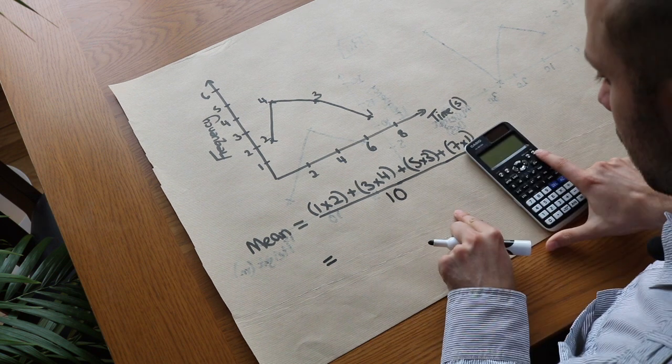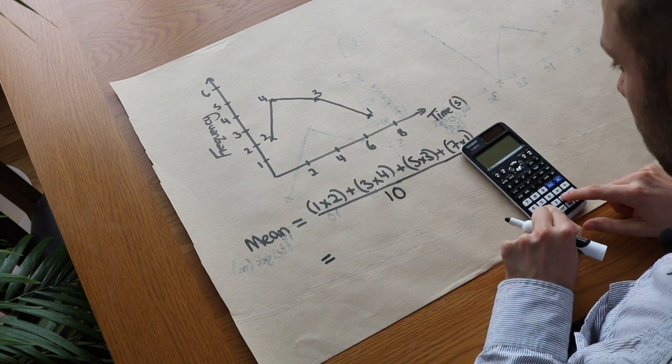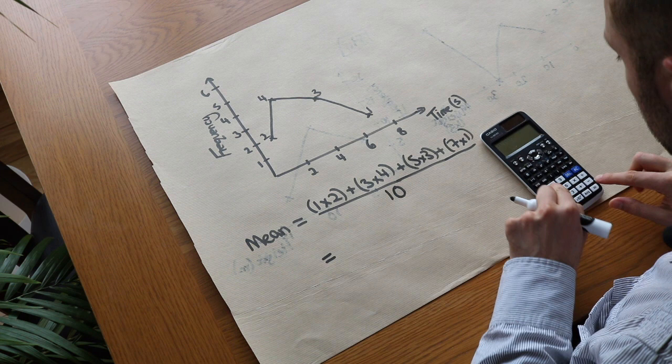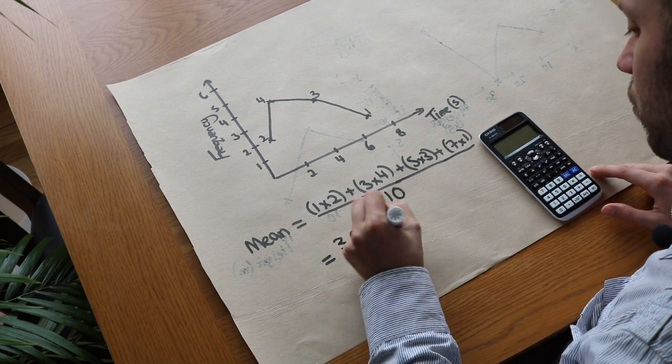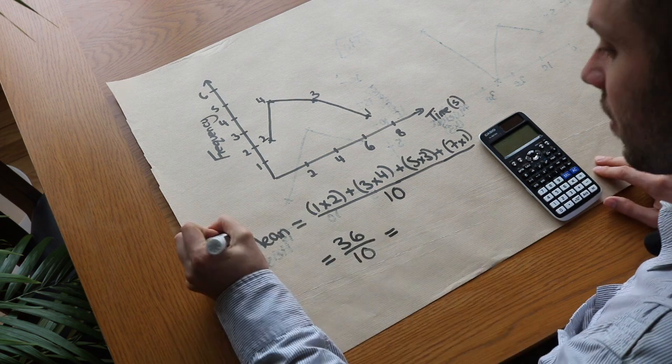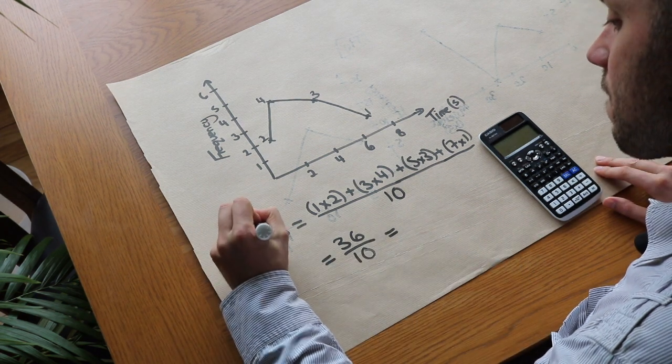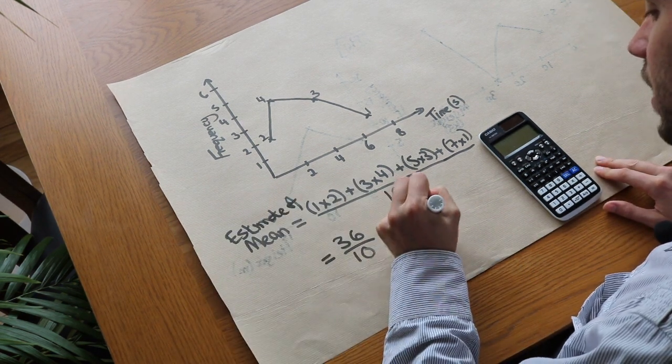And if I just do that on my calculator, we got 2 plus 12 plus 15 plus 7—that's 36 divided by 10—and therefore an estimate of the mean would be 3.6 seconds.